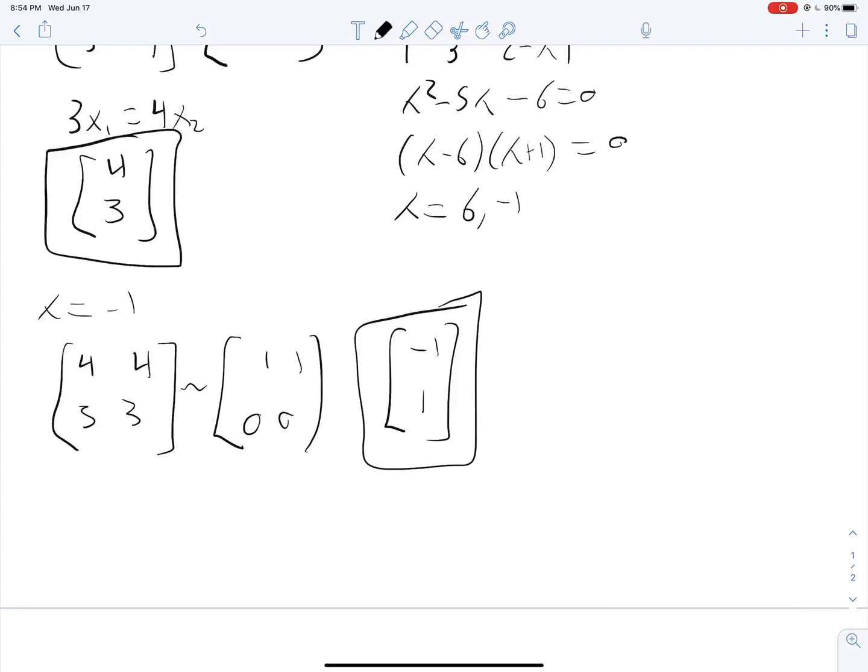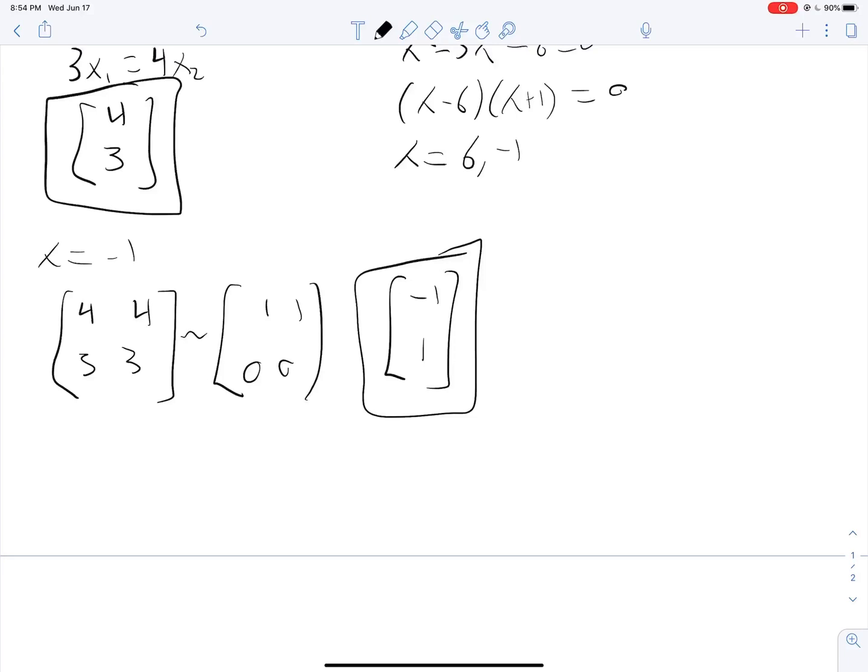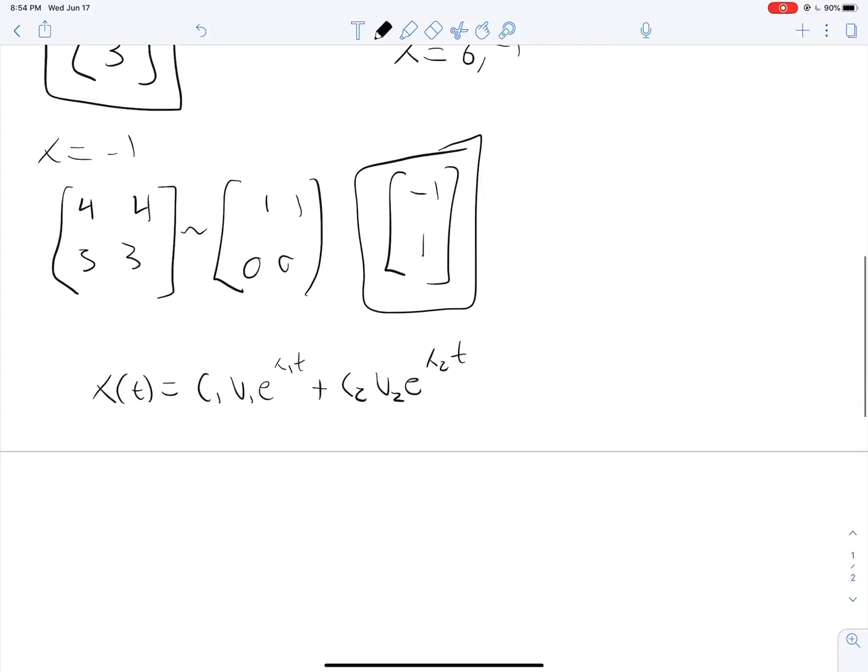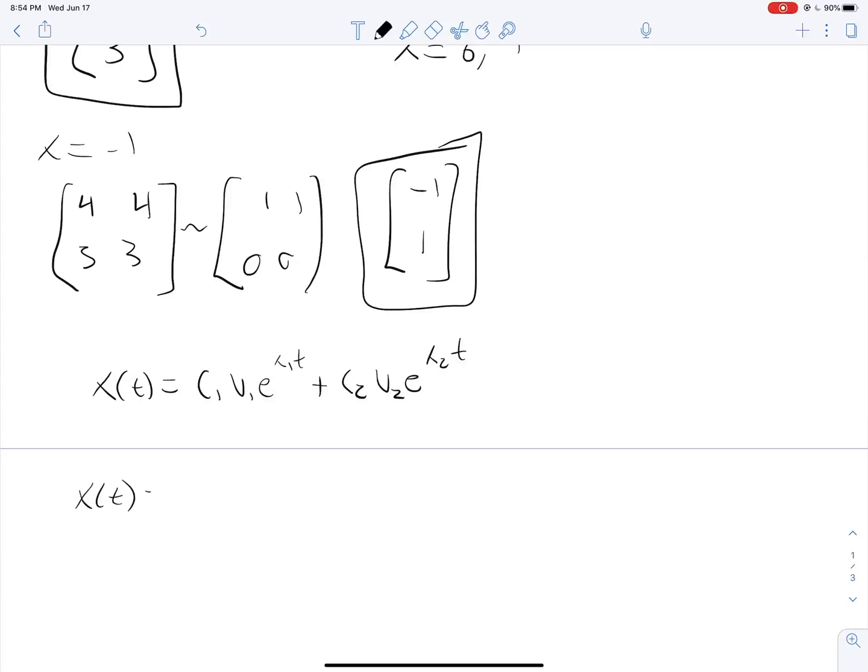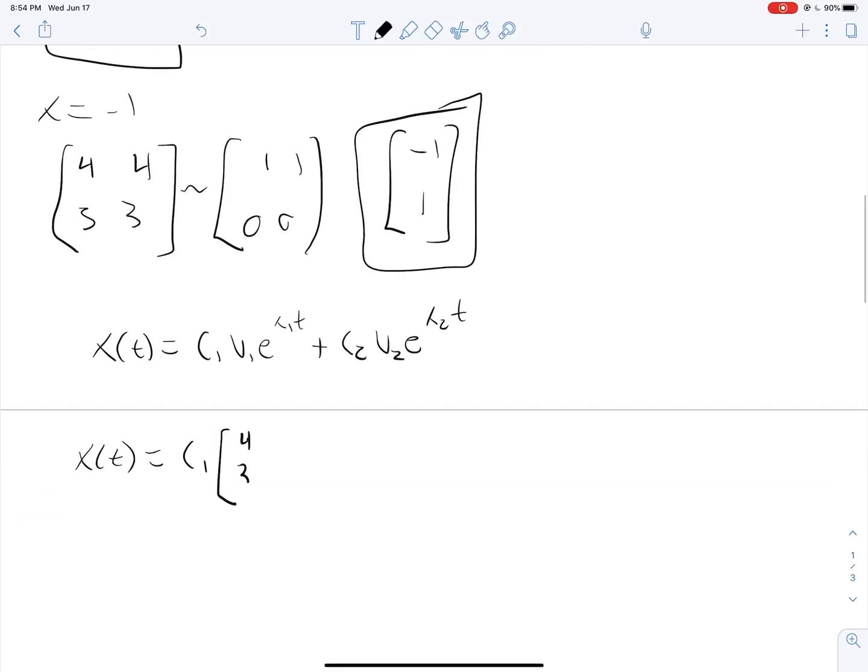So at this point, we are almost done because we know that our solution will take the form x of t is equal to c1 v1 e to the lambda 1 t plus c2 v2 e to the lambda 2 t. And so plugging all of this in, we have x of t is equal to c1, some unknown constant times v1, which is 4, 3, e to the 6 t. There's our lambda 1, the eigenvalue associated with that eigenvector, and then plus c2, negative 1, 1, e to the negative t.